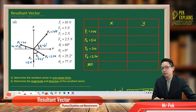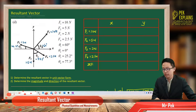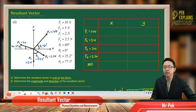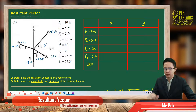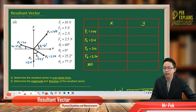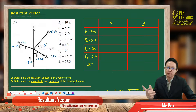Here is a question on the resultant vector. Let us determine the resultant vector in unit vector form, and also let us determine the magnitude and direction of the resultant vector.